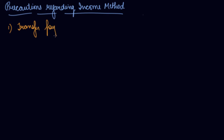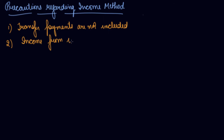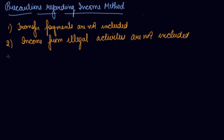There are important precautions when calculating national income using the income method. Transfer payments are not included — for example, old-age pension is a one-sided payment and is not included. Unemployment allowances, scholarships, and pocket expenses should also not be included. Second, income from illegal activities such as smuggling, robbery, theft, and gambling should not be included in national income.